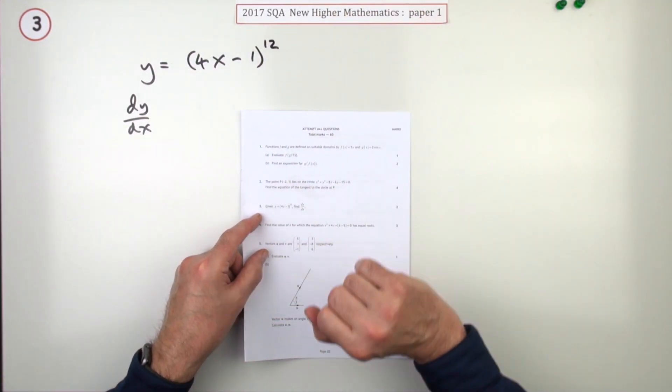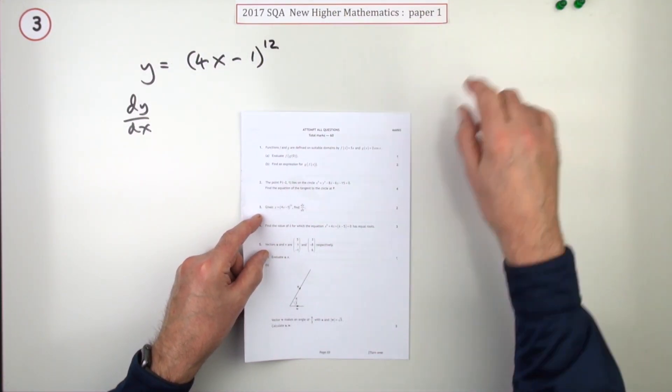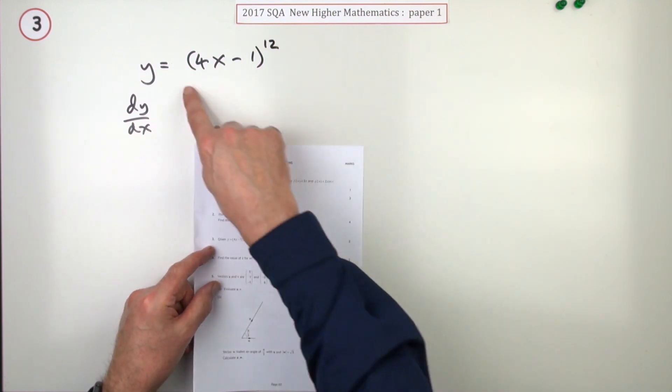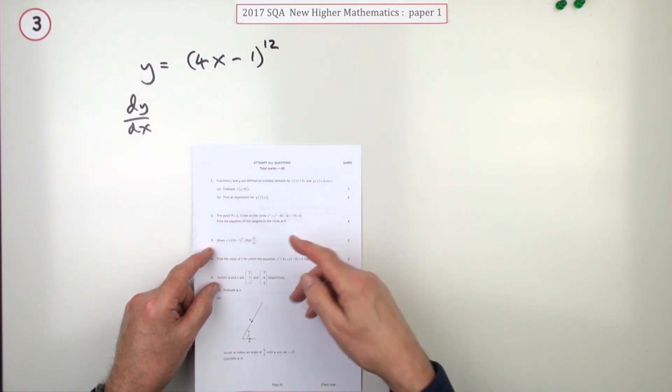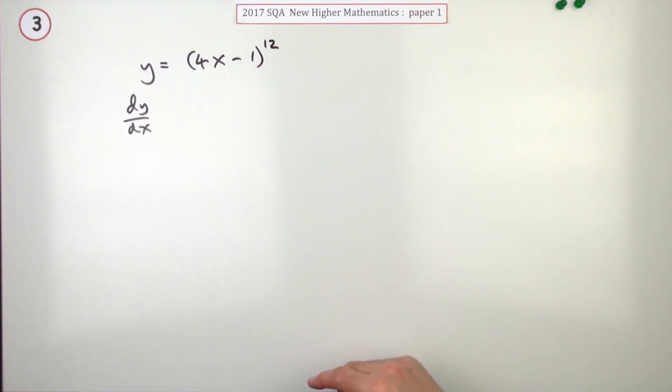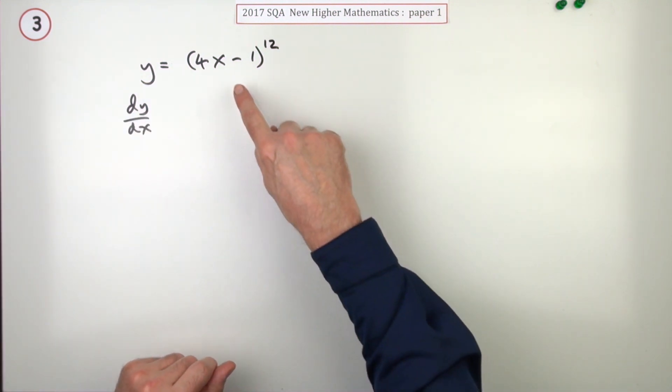Number three from paper one of the 2017 higher maths, just a little two mark question here. You're given this expression for y and you've defined the derivative. Well, you should recognize that straight away—it's a chain rule.